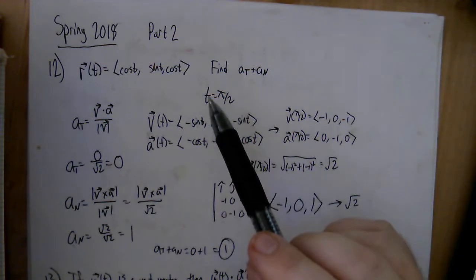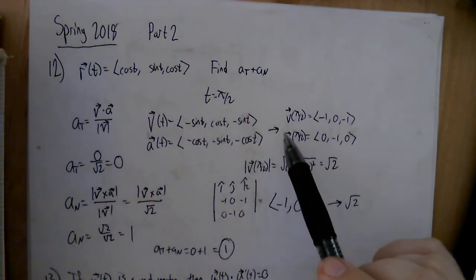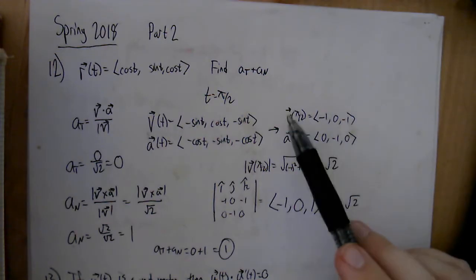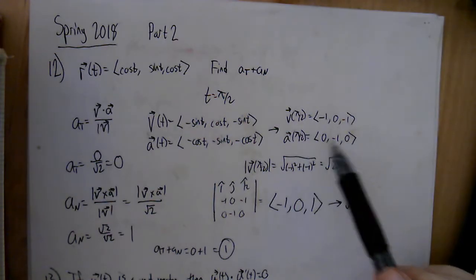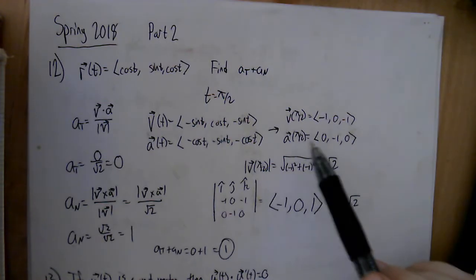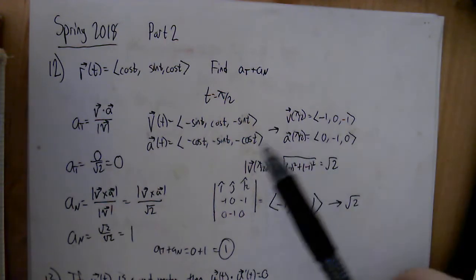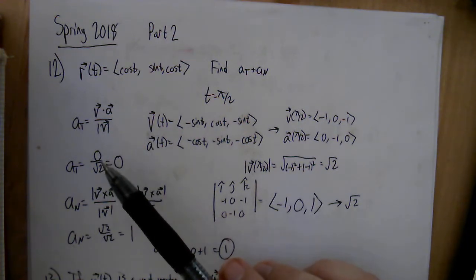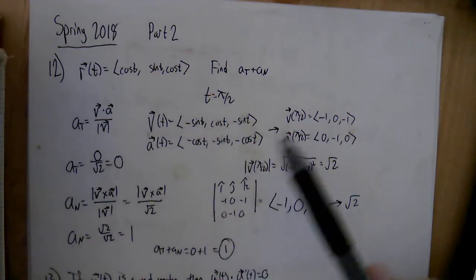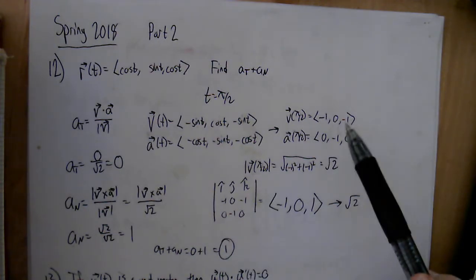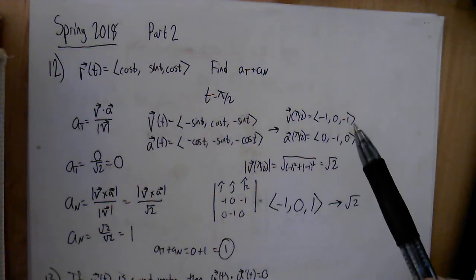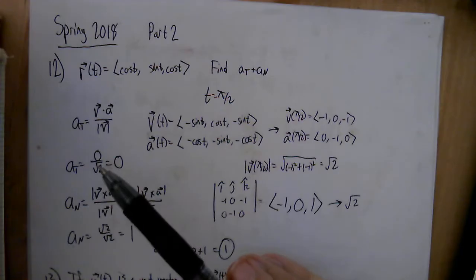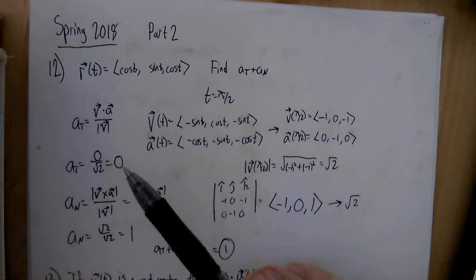Since we're evaluating at t equals pi over 2, I plugged that in, giving velocity vector negative 1, 0, negative 1 and acceleration vector 0, negative 1, 0. Then I compute v dot a: negative 1 times 0 is 0, 0 times negative 1 is 0, and negative 1 times 0 is 0. So the dot product is 0, meaning we have no tangential acceleration.